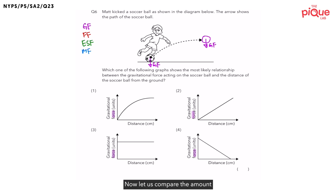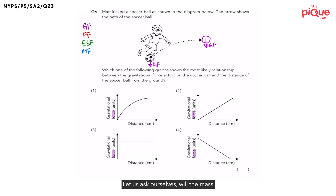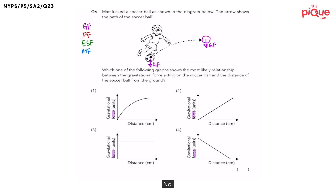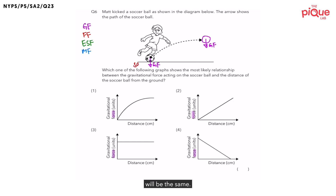Now let us compare the amount of gravitational force acting on the soccer ball on the ground with the one in the air. Will the amount of gravitational force acting on them be the same or different? Will the mass of the soccer ball change as it is flying through the air? No. And since the mass of the soccer ball on the ground is the same as the one in the air, the amount of gravitational force acting on both soccer balls will be the same.